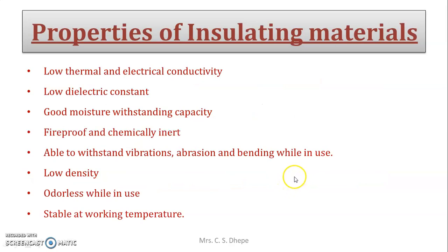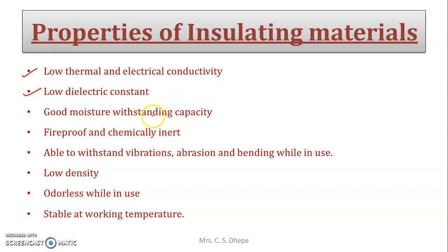Let us see the properties that insulating material must possess. First is low thermal conductivity and low electrical conductivity. The insulating material must have low dielectric constant. It must also have good moisture withstanding capacity, meaning it should be able to tolerate moisture.